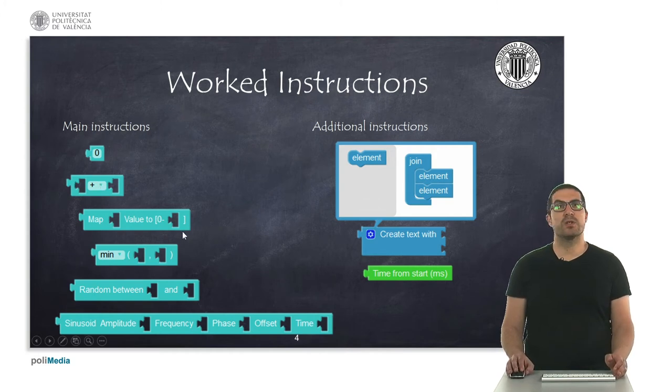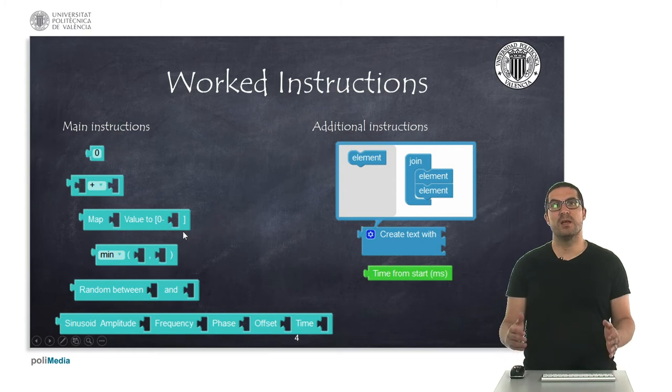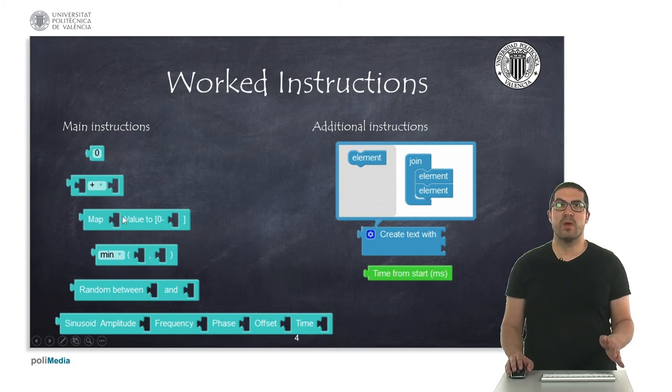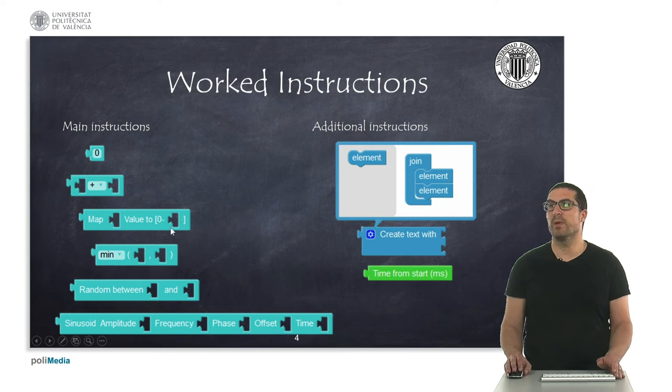With this instruction, we can map. It's a linear scaling between different values. It maps whatever input we have here. Usually, in this case, for the ESP32 processor, the input range will be from 0 to 4095, which is the range of the ADC converter. And then we map this analog signal into whatever value we want here, from 0 to whatever value we introduce here.